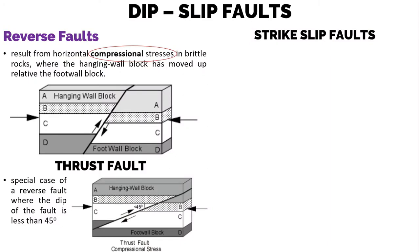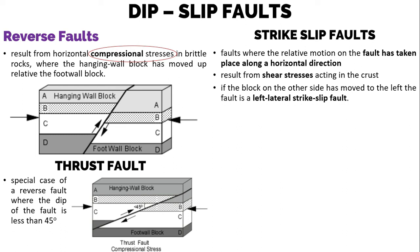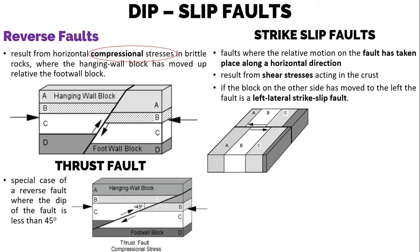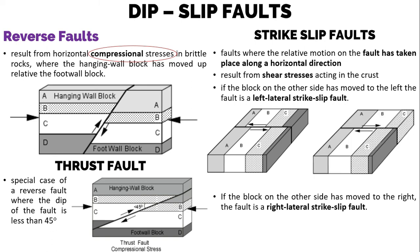Strike-slip faults are faults where the relative motion on the fault has taken place along a horizontal direction. They result from shear stresses acting in the crust. If the block on the other side has moved to the left, the fault is a left-lateral strike-slip fault. If the block on the other side has moved to the right, it is called a right-lateral strike-slip fault. Strike-slip faults can be of two varieties depending on the sense of displacement: left or right.